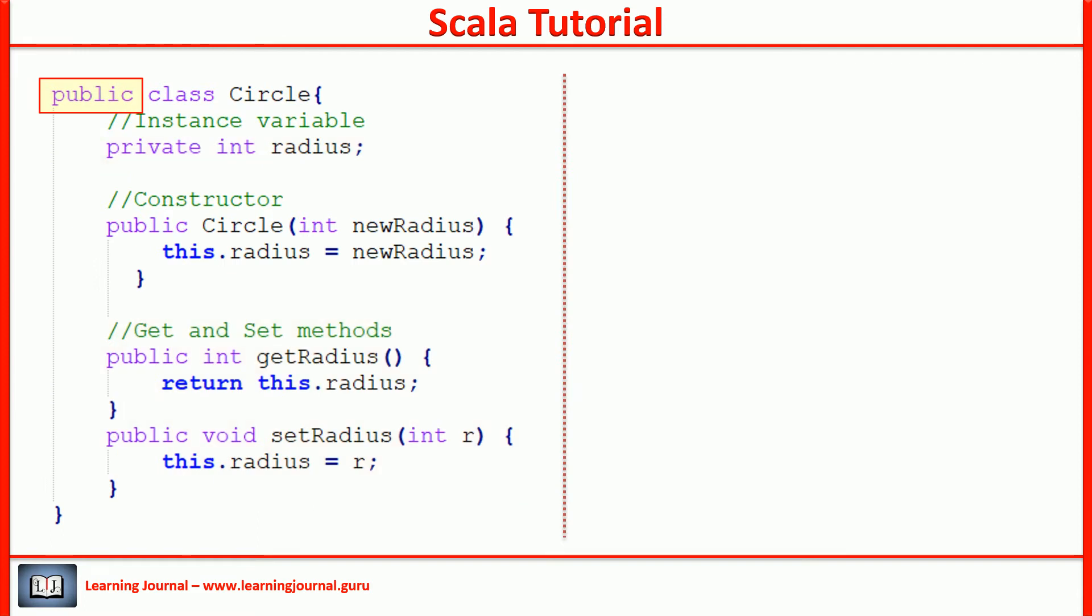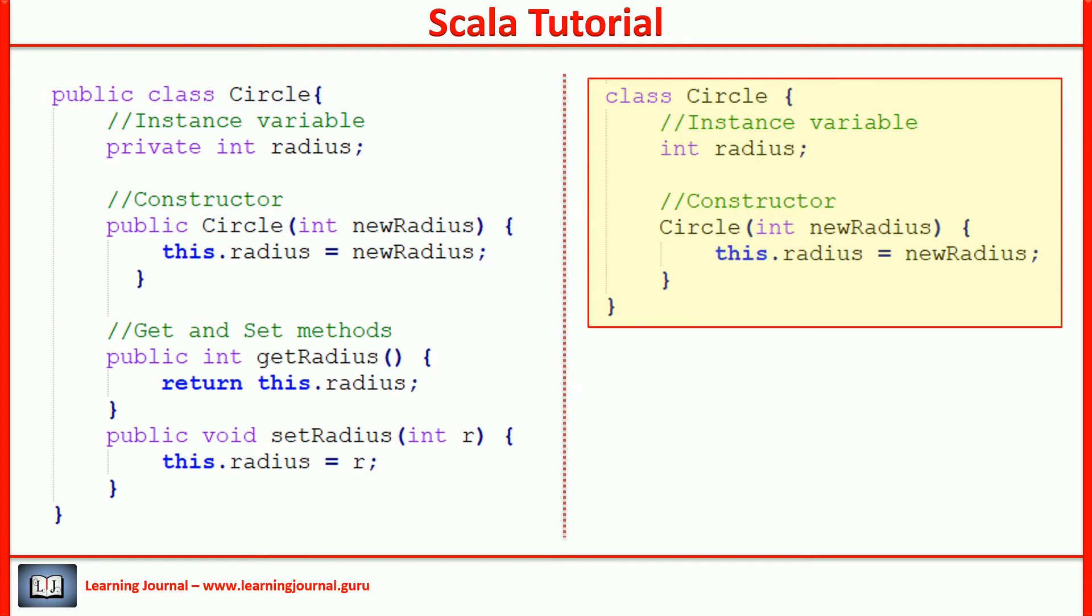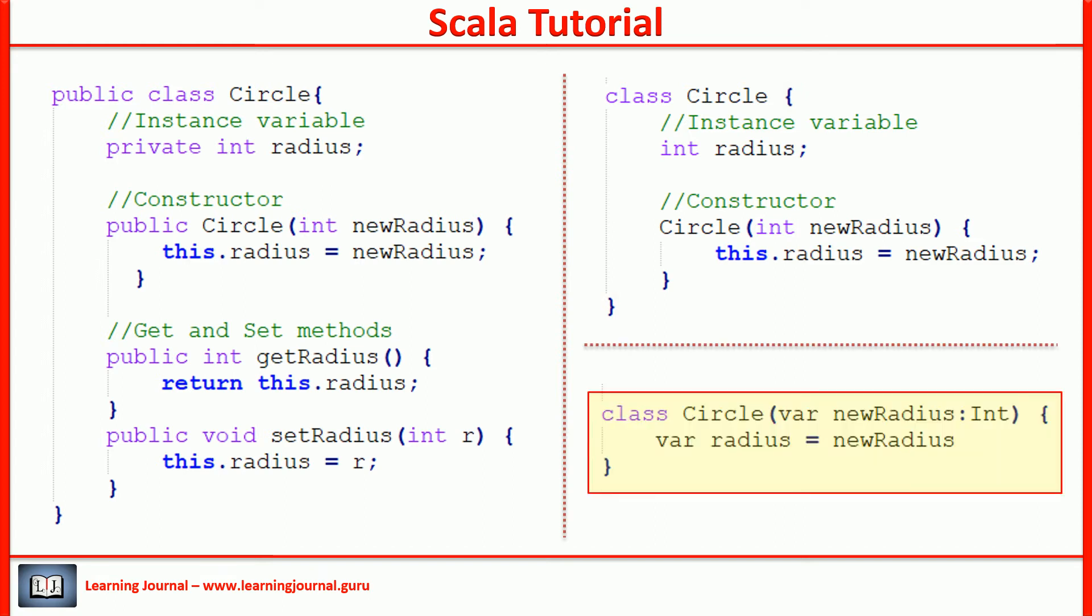We also learned that there is no need to type the public modifier. Now we are left with these few lines. Scala creator said, why the hell you want to type the class name and these curly braces once again? We already typed the class name here. So, pass the arguments right here. We already have a pair of curly braces here. So, use it as the body of your constructor. Amazing, isn't it? Now we have a Scala class with a primary constructor.